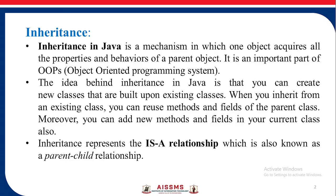Inheritance in Java is a mechanism in which one object acquires all the properties and behaviors of a parent object. It is an important part of OOPs, that is object oriented programming system. The idea behind inheritance in Java is that you can create new classes that are built upon existing classes. When you inherit from an existing class, you can reuse methods and fields of the parent class, and moreover you can add new methods and fields in your current class also. Inheritance represents the IS-A relationship, which is also known as the parent-child relationship.